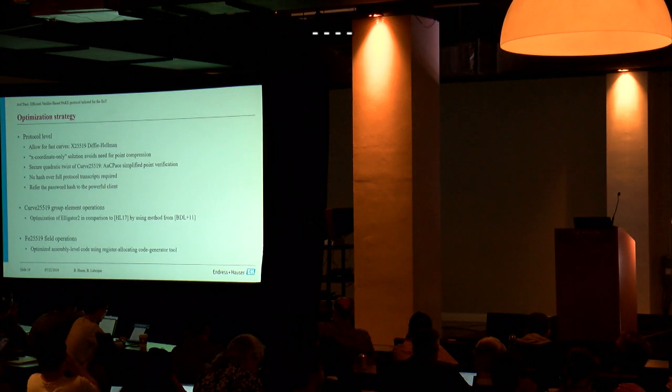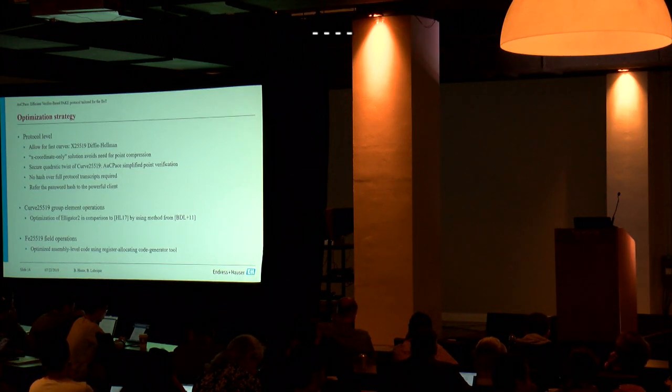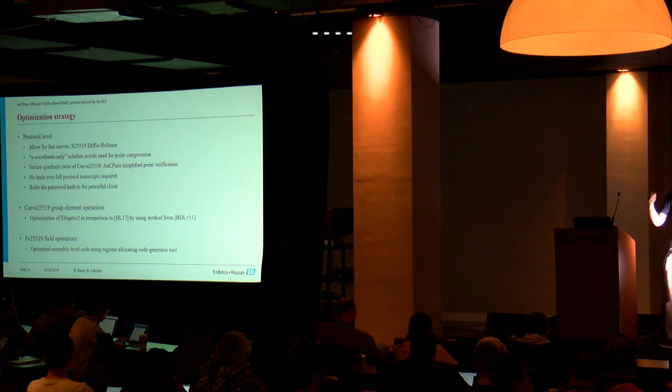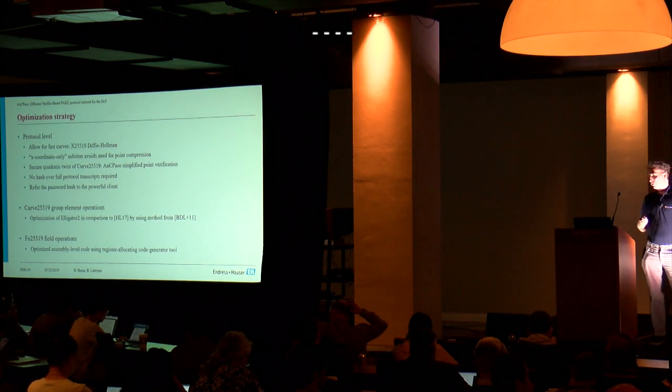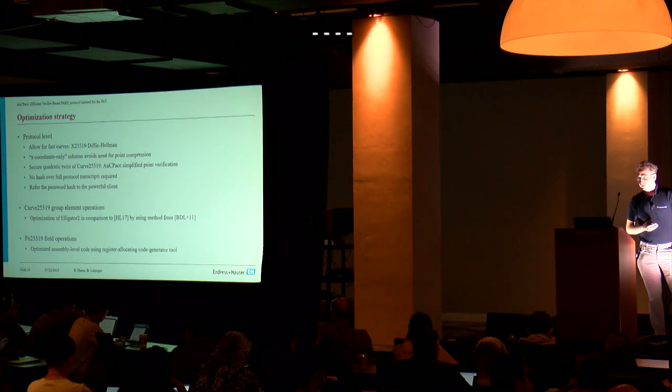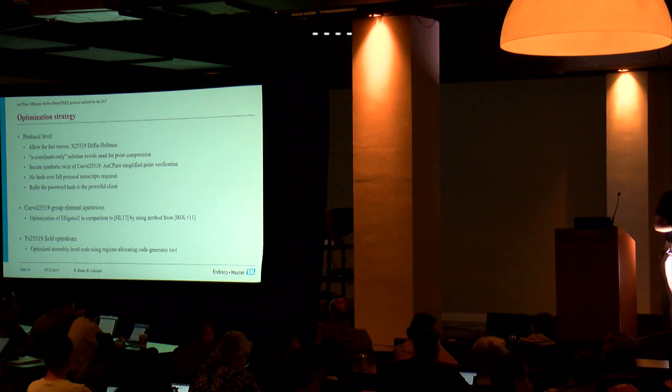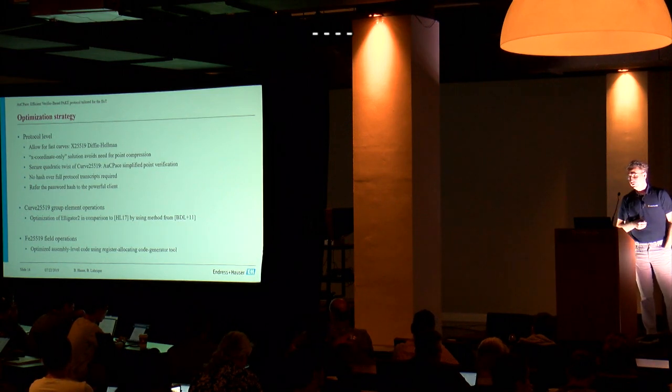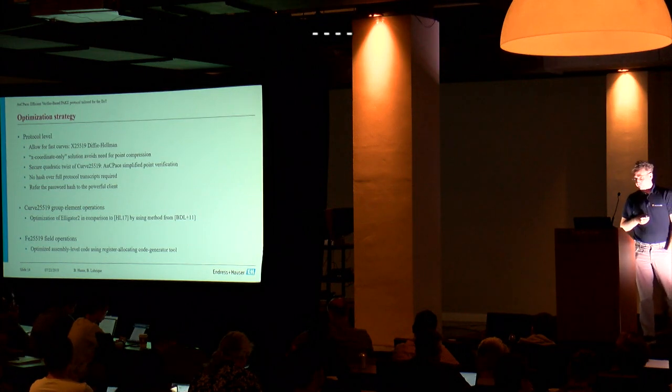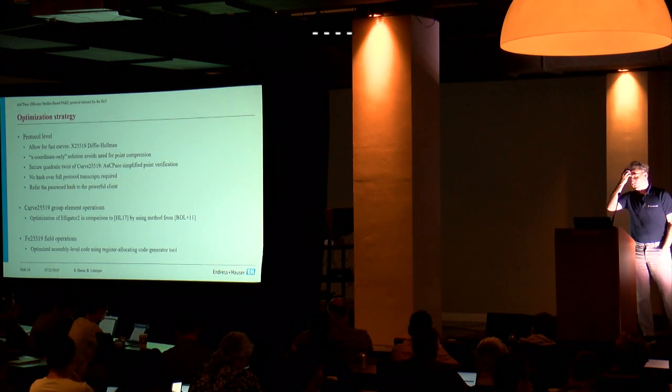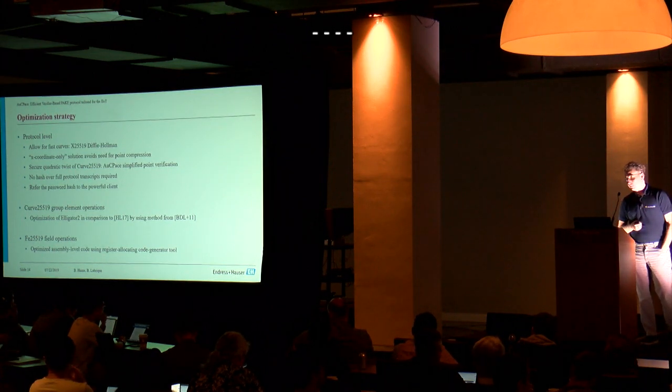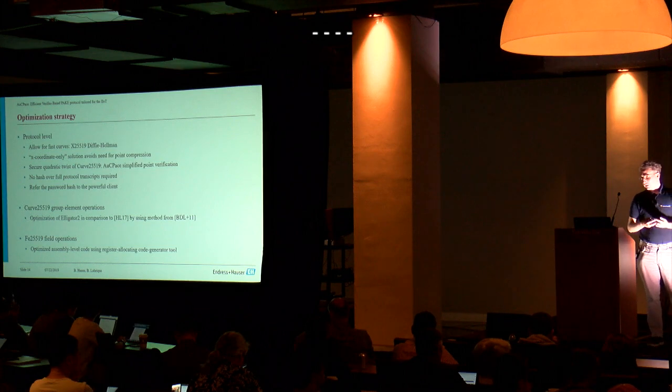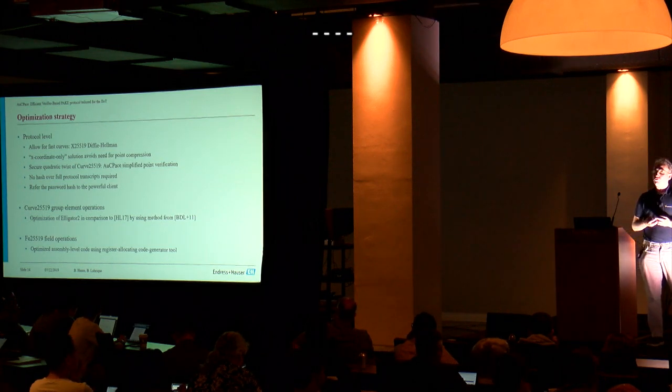So in order to optimize for this constraint setting, we followed a system-level approach, where we did not only try to improve the assembly arithmetic, but also tried to optimize the whole protocol construction for the constraint server. Our protocol allows for fast curves. Many security proofs for PAKE protocols require prime-order curves, which tend to be slower. Our approach allows for X-coordinate-only algorithms, which might be easier to implement, and avoid the need of point compression.